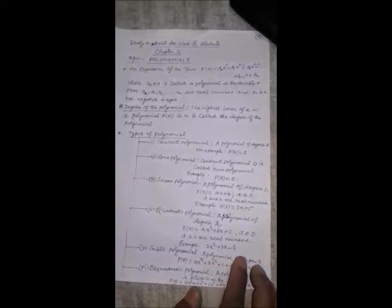A polynomial of degree 3 is called cubic polynomial, written in the form ax cube plus bx square plus cx plus d, where a is not equal to 0.